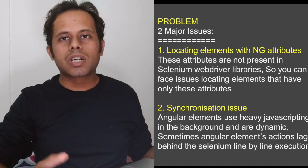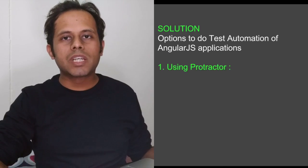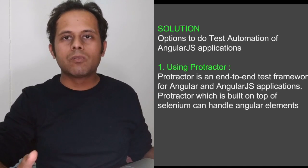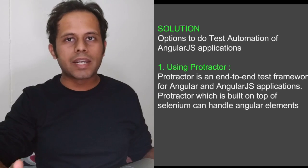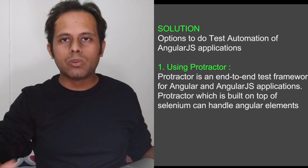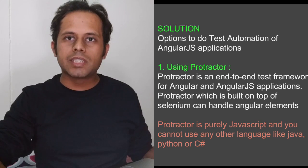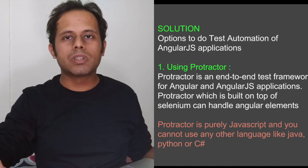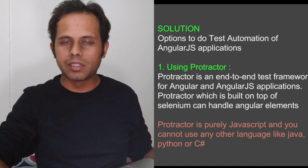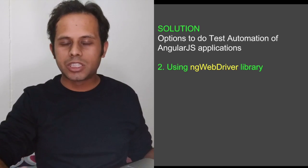Coming to the last part — what options do we have to handle this. The first option is we can use Protractor. Protractor is an end-to-end test framework for testing Angular and AngularJS applications, and using Protractor you can easily do test automation of these applications. The downside of using Protractor is that it is only based on JavaScript, so you can only use JavaScript — you cannot use any other programming language with Protractor.